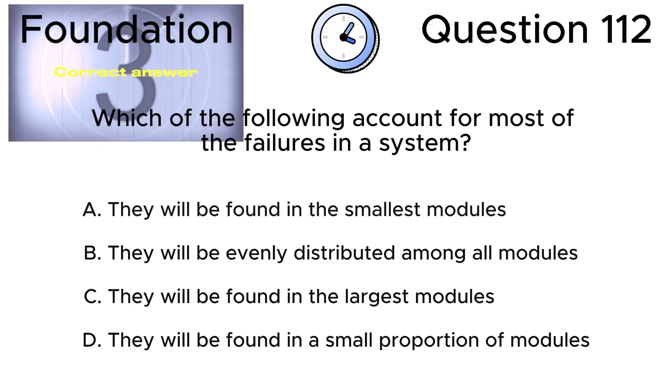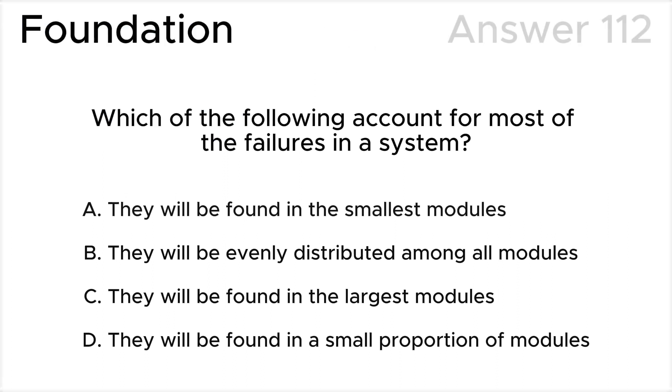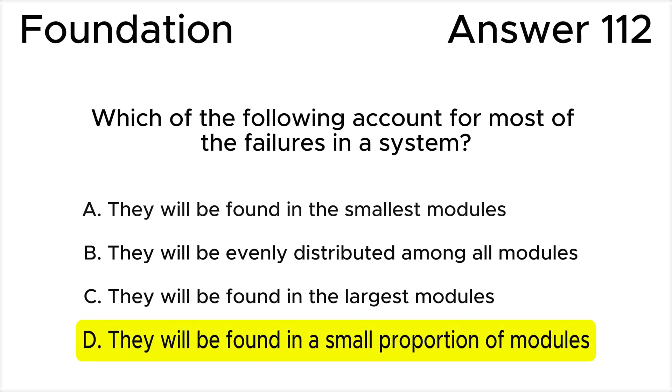The correct answer is D, according to test principle 4 in the ISTQB syllabus. This aligns with the testing principle that defects tend to cluster together. The Pareto principle, also known as the 80-20 rule, suggests that a small percentage of modules or components typically contain the majority of defects. Therefore, focusing testing efforts on these high defect density areas is an effective strategy.